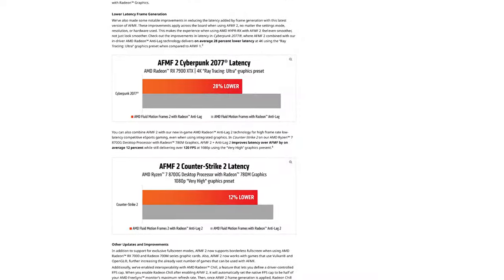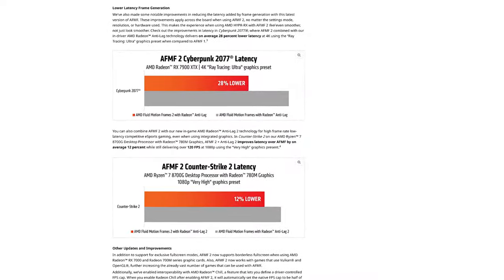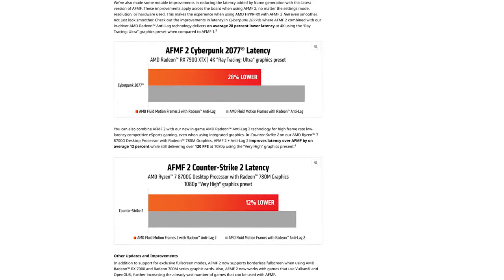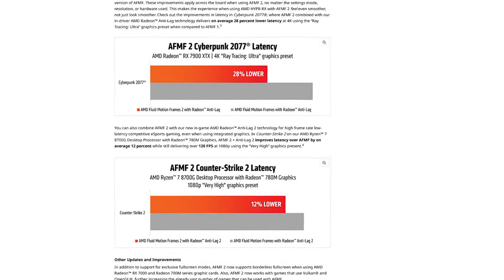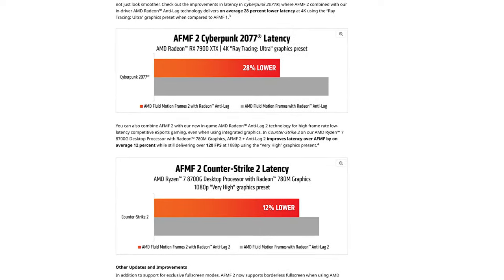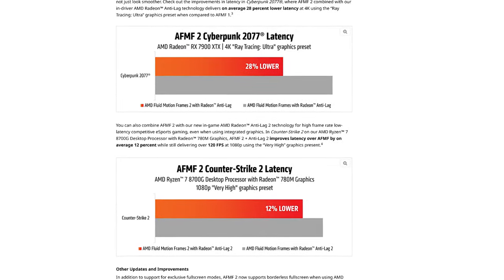The main thing that's new here is a revision to how AFMF works under the hood, as AMD now claims that AFMF2 runs 28% lower latency than AFMF1, which is a pretty massive improvement — and we will of course be testing that. This also means AFMF now works on not just DirectX titles, but Vulkan and OpenGL titles too, which is a pretty huge change.